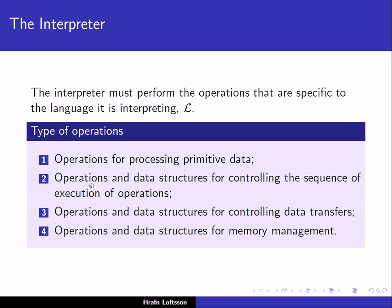The second type of operations are data structures for controlling the sequence of execution. For example, if we have a loop in our program, we must be able to execute the statements inside the loop and then jump back to the beginning to test the condition that controls whether we continue in the loop or not.